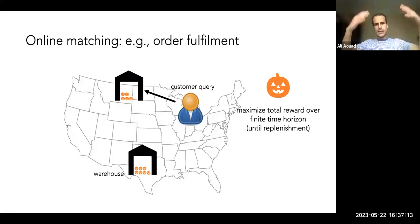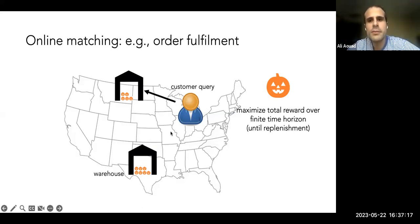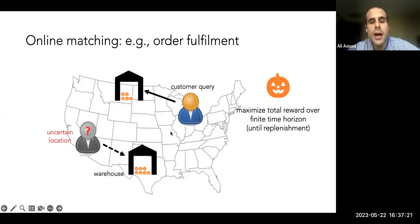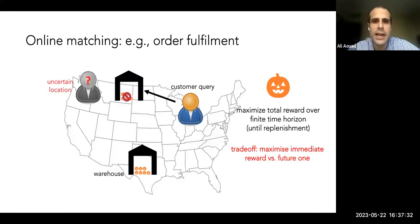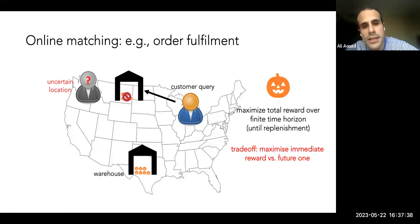A decision that might seem optimal right now might turn out to be suboptimal depending on what happens next. If a consumer shows up, I'll be able to satisfy them from the other warehouse. But if I exhaust and deplete my inventory initially, my initial myopic decision might be highly suboptimal in hindsight.